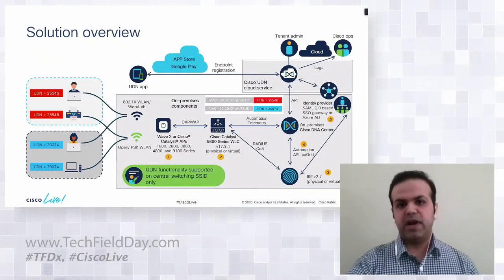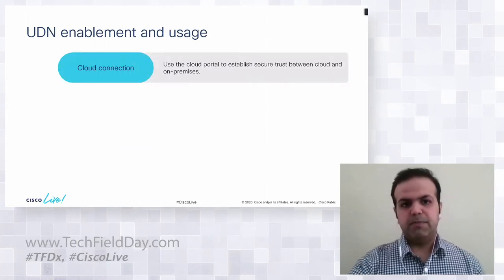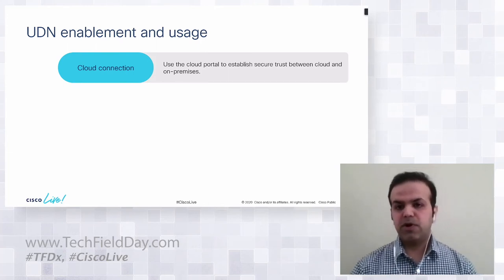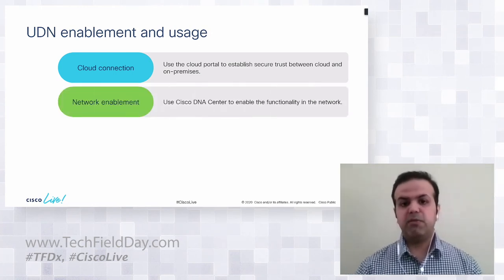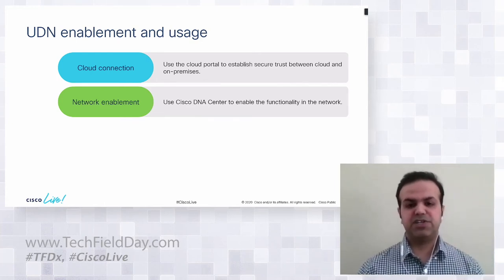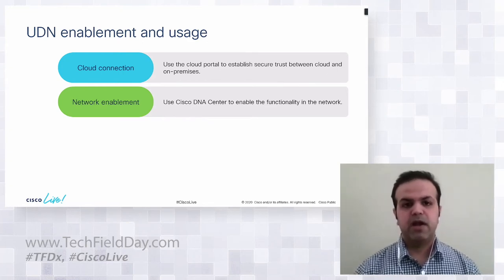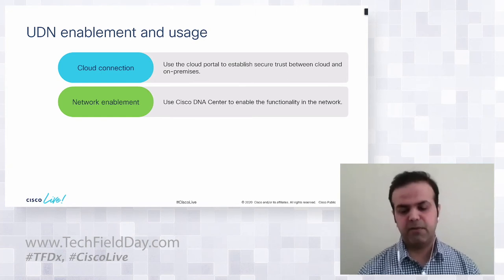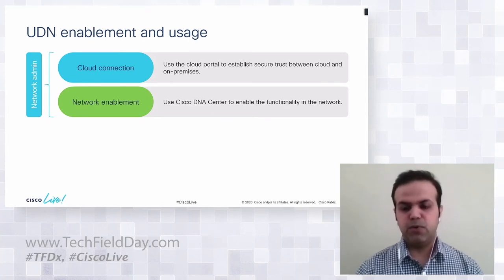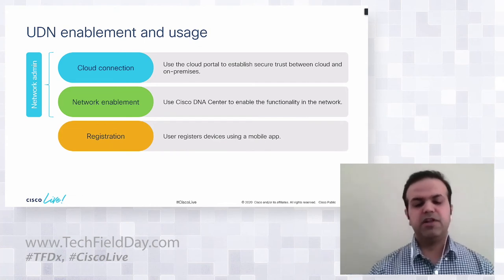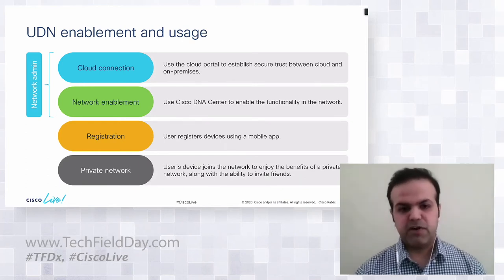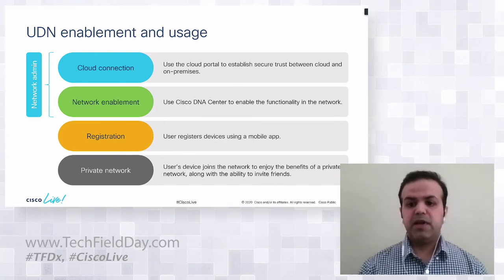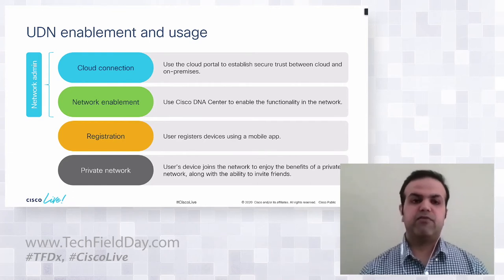Now we'll see what different things an admin can do and what an end user can use. The admin will go to the cloud portal to establish a secure connection between the cloud and on-prem DNA Center, then go to Cisco DNA Center to enable the functionality. For the network user, they simply register their devices through the mobile app, connect to the shared network, and automatically enjoy the benefits of the private network — plus the flexibility to invite friends.